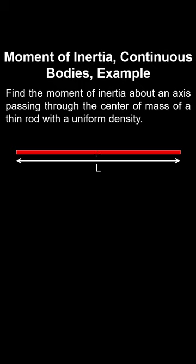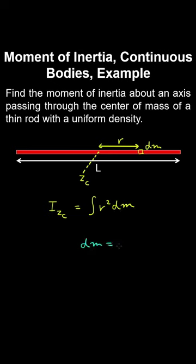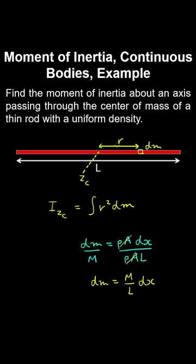Let's find the moment of inertia about an axis passing through the centre of mass of a rod of uniform density. The centre of mass is at the middle of the rod. The moment of inertia about the z axis is the integral of r² dm. Here dm equals the density times cross-sectional area times the differential element thickness. Dividing by total mass, we can write dm as (m/L) dx and integrate from −L/2 to L/2. Evaluating this integral gives ML²/12.